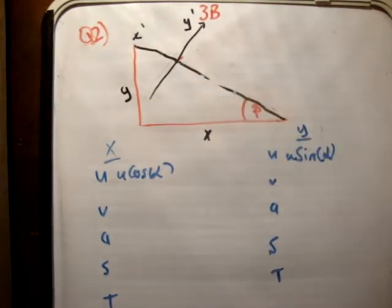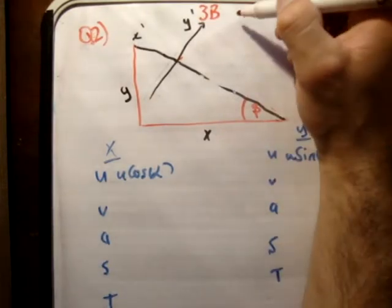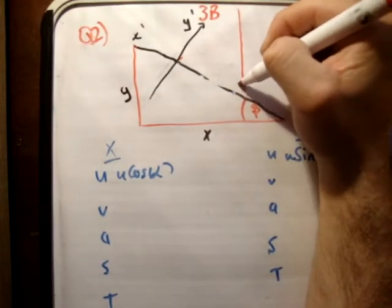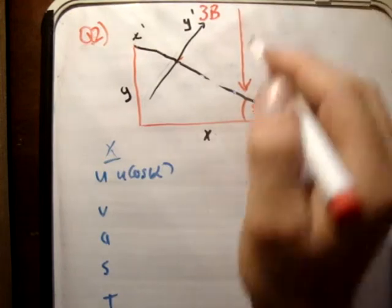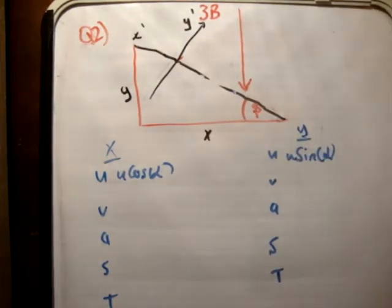So gravity acts in the negative y direction. So how do we do this? Well, we need to resolve it in the x prime, y prime plane in order for this to be any good. And this, you need to be a bit switched on with this. So the best way to do it is as follows.